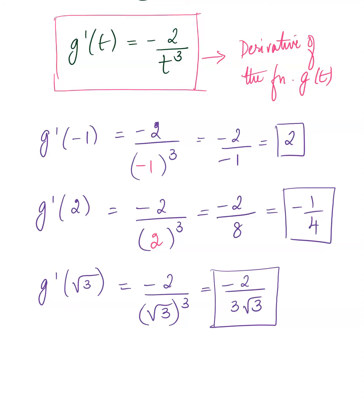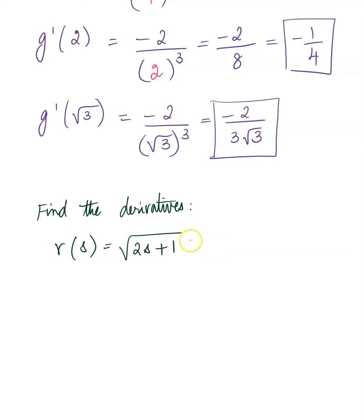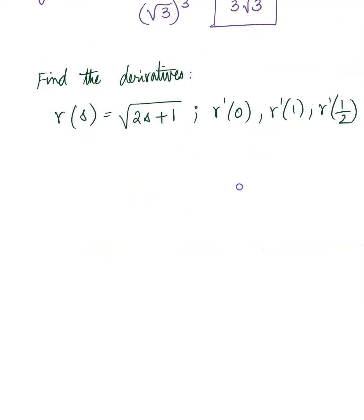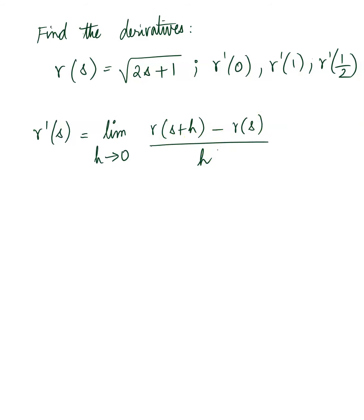We'll do a similar problem now. Find the derivative — they give us the function r of s is square root of 2s plus 1, using lowercase s. The variables are r and s — the function is r and the variable is s. R prime of s will be limit h approaches 0, r of s plus h minus r of s, all over h. I'm converting this for our problem based on the definition.